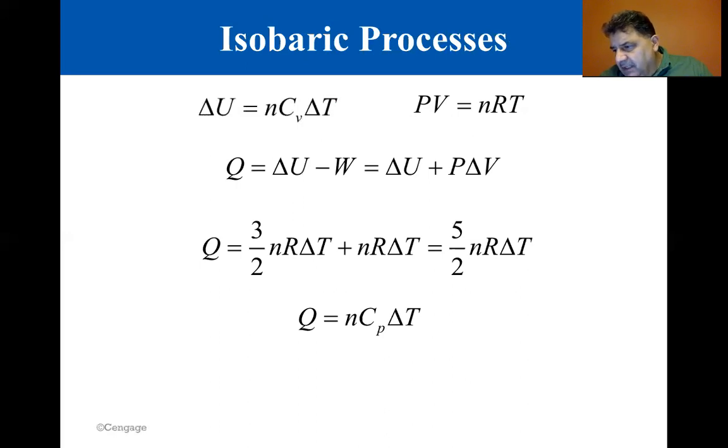For ideal gases, the molar heat capacity at constant pressure, CP, is the sum of the molar heat capacity at constant volume, CV, and the gas constant R.